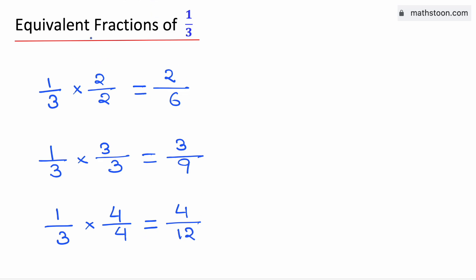Therefore, the three equivalent fractions of one-third are 2 over 6, 3 over 9, and 4 over 12.